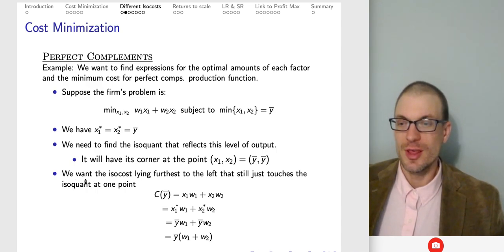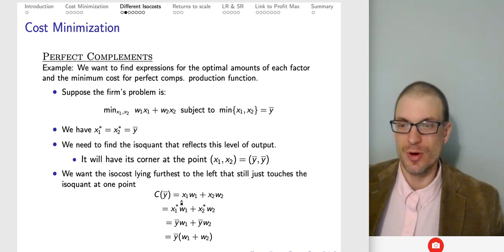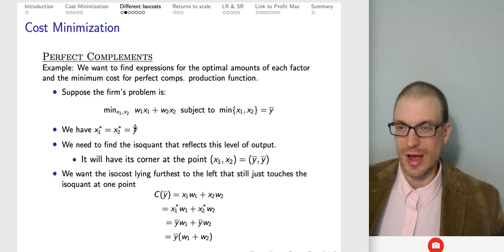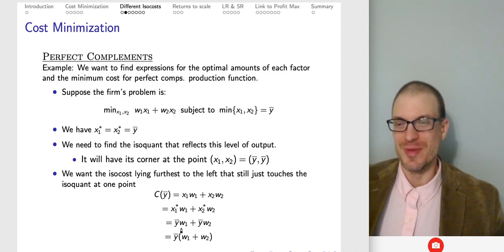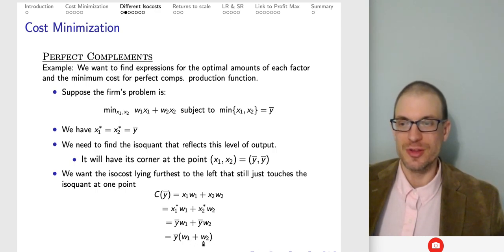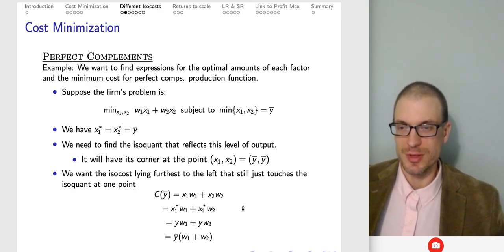We want the isocost furthest to the left that just touches the isoquant. The cost function is: C = ω₁ · Y̅ + ω₂ · Y̅. Both factor demands equal Y̅, so we factor out output and get C = Y̅(ω₁ + ω₂) — the output times the sum of the factor prices. That is the cost to produce Y̅ units of output.